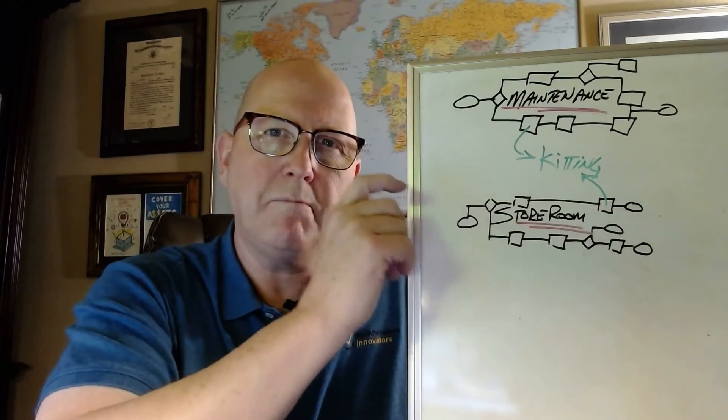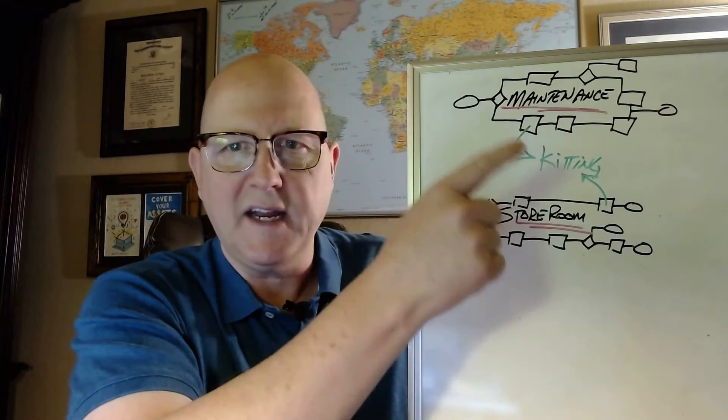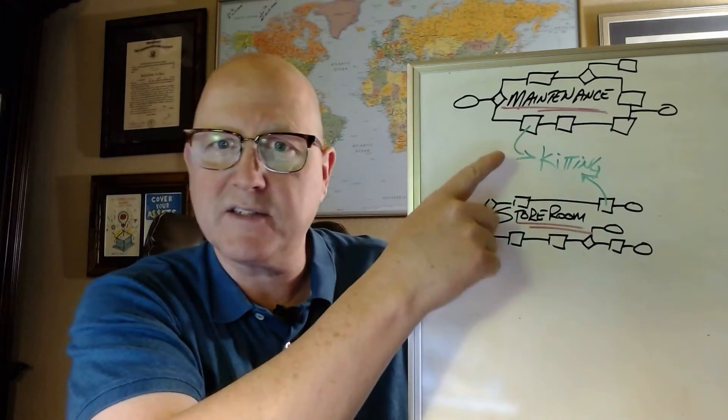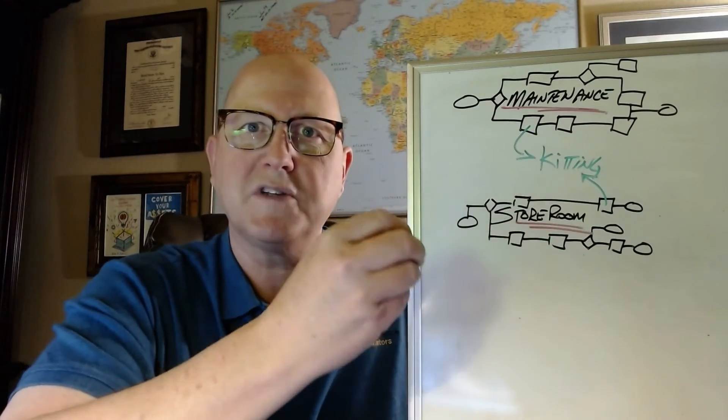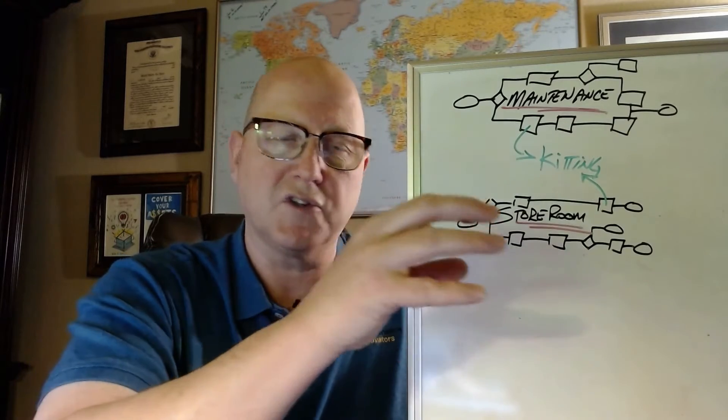There's about 32 major storeroom processes, but look, here's where they're connected. It's right here in the planning process that the planner identifies what parts they need for a job and puts that in a job plan and creates a pick list and sends that over to the storeroom.